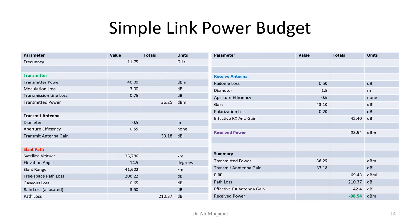Here is an example where you look at the transmitted parameters with the value, total, and units, then the receiver parameters, and then the slant path or the path itself. We'll show examples in the coming videos — just be with us and we'll see you in coming videos.